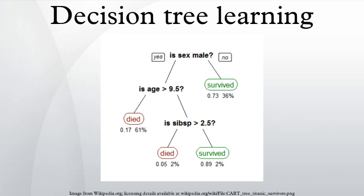There are concepts that are hard to learn because decision trees do not express them easily, such as XOR, parity or multiplexer problems. In such cases, the decision tree becomes prohibitively large. Approaches to solve the problem involve either changing the representation of the problem domain or using learning algorithms based on more expressive representations. For data including categorical variables with different numbers of levels, information gain in decision trees is biased in favor of those attributes with more levels. However, the issue of biased predictor selection is avoided by the conditional inference approach.